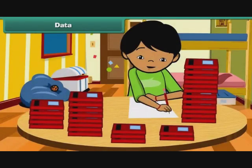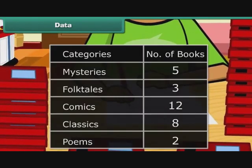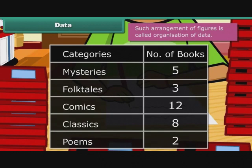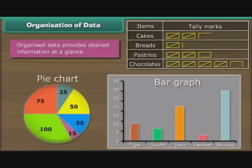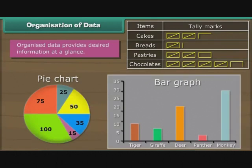When Ravi reaches home, he divides the 30 books into five different categories of comics, mysteries, folk tales, classics and poems. Here is how he summarized the details in the form of a table. Such arrangement of figures is called organization of data. Organized data provides desired information at a glance. We can organize data using tally marks, pie charts and bar graphs.